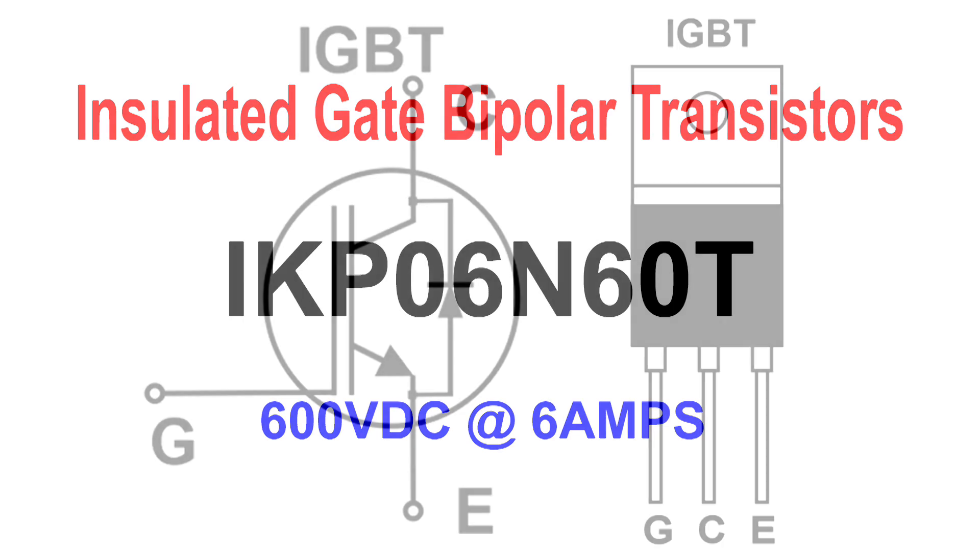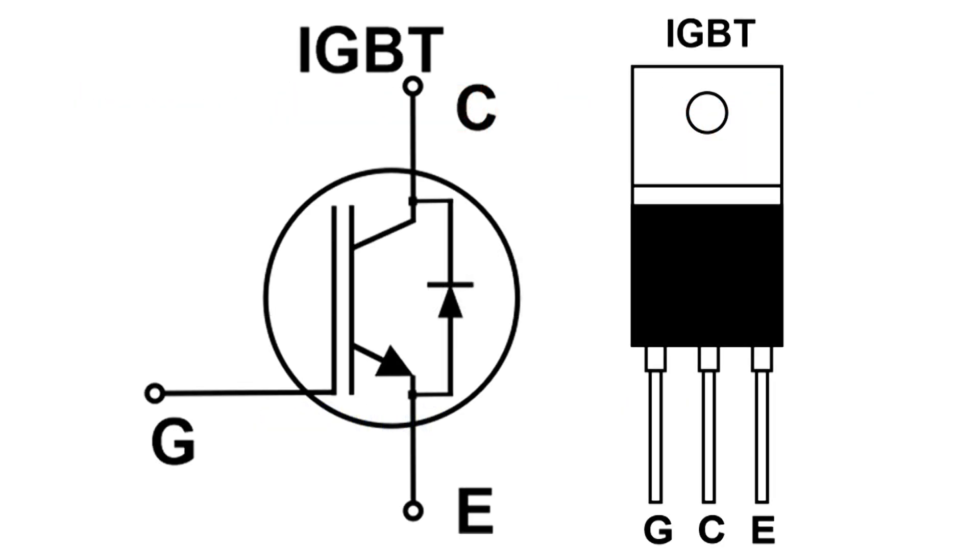Here is the schematic symbol for an IGBT. On the left you can see that it's got a gate like a MOSFET but it also has an emitter and collector like a transistor. So what that means is we've got a high impedance input and a low impedance output.